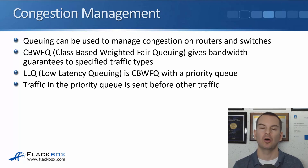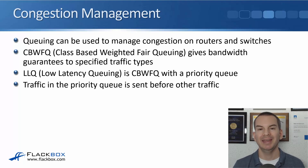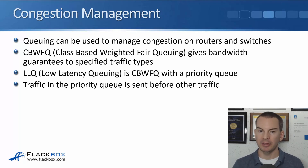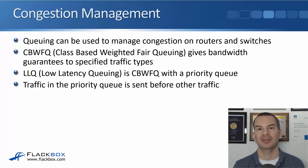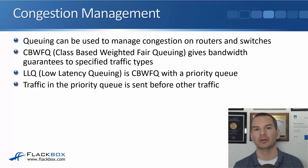There are two types of queuing policies that are commonly used: CBWFQ, which is class-based weighted fair queuing, and LLQ, which is low-latency queuing. With CBWFQ, it gives bandwidth guarantees to specified traffic types. So when you've got congestion, you can say for this particular type of traffic, I'm going to give it so much of the available bandwidth. LLQ is class-based weighted fair queuing with a priority queue. The configurations are exactly the same — LLQ just has an additional line where you can give priority to a type of traffic. Traffic in the priority queue is sent before other traffic.